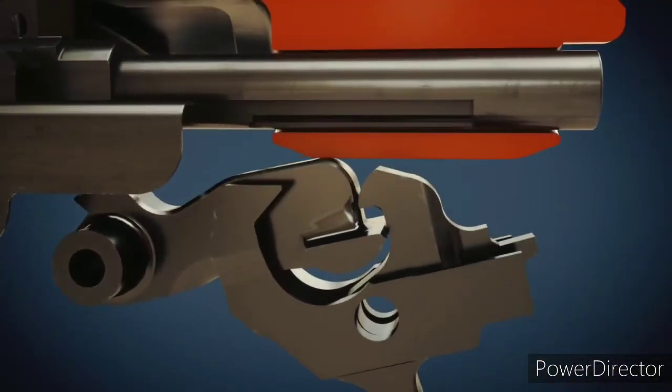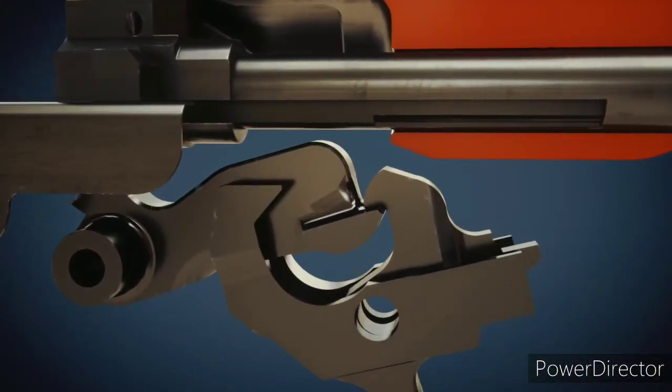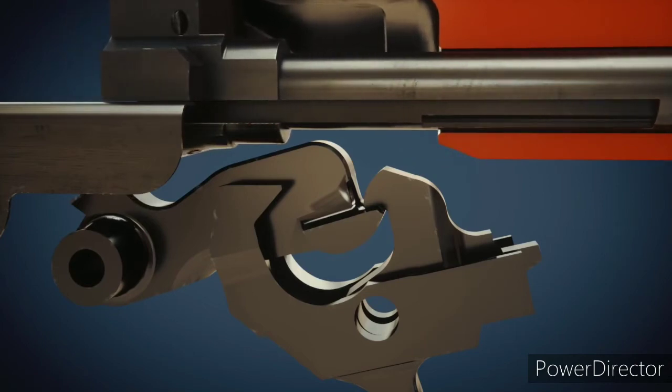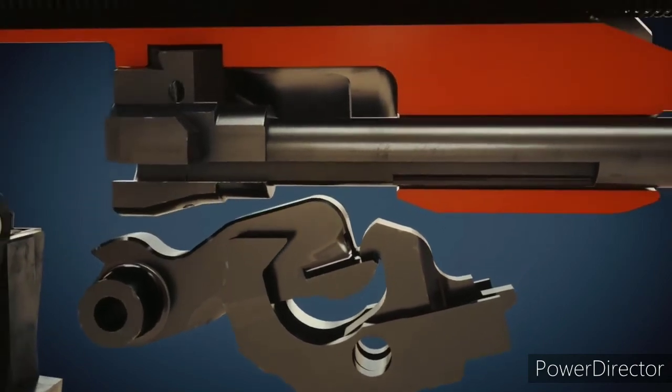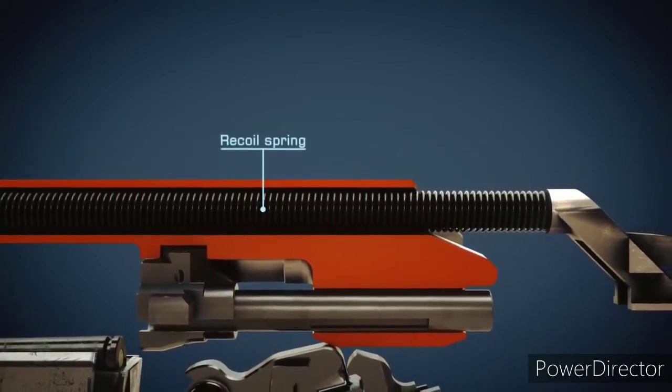The hammer has been pushed down by the bolt carrier and is then caught by the disconnector. The tensioned recoil spring pushes the bolt carrier forward. This causes the bolt to feed a new cartridge into the chamber.